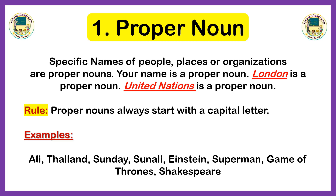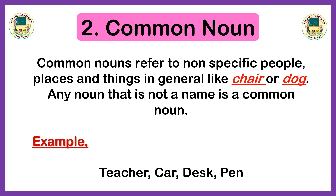First is the proper noun. Specific names of people, places, or organizations are proper nouns. Your name is a proper noun; London is a proper noun because it is a name of a place; United Nations is also a proper noun. An important rule to remember: proper nouns always start with a capital letter. Examples of proper nouns are Ali, Thailand, Sunday, Einstein, Superman, Game of Thrones, and Shakespeare, because they specify places, things, and names of persons.